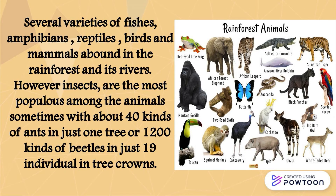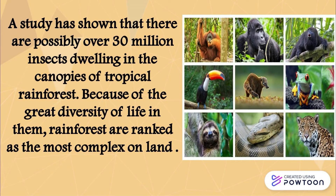Several varieties of fishes, amphibians, reptiles, birds, and mammals abound in the rainforest and its rivers. However, insects are the most populous among the animals, with sometimes about 40 kinds of ants in just one tree, or 1,200 kinds of beetles in just 19 individual tree crowns. A study has shown that there are possibly over 30 million insects dwelling in the canopies of tropical rainforests.